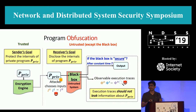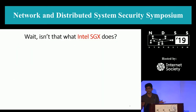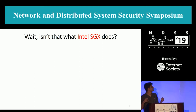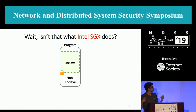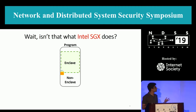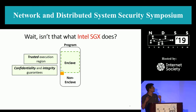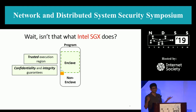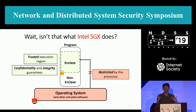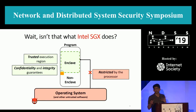A lot of you might be thinking this is very similar to Intel SGX — that's what Intel SGX does. So let's revise what Intel SGX does. You have a regular program, and Intel SGX divides it into two parts: the enclave part and the non-enclave part. The enclave is the trusted execution region where you can store your sensitive code and data. There are confidentiality and integrity guarantees provided by the enclave, meaning the operating system and other untrusted software can't directly access the enclave memory because it's restricted by the processor.